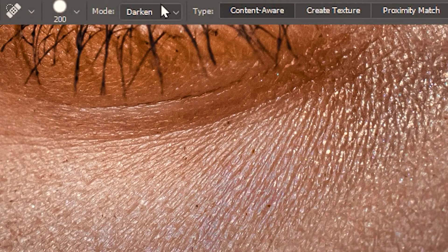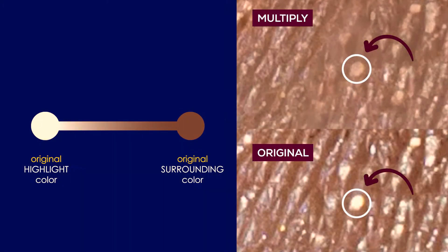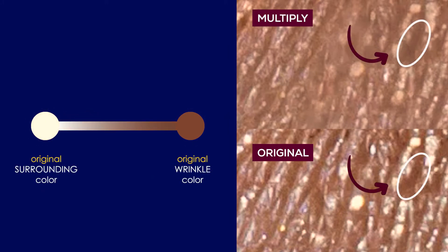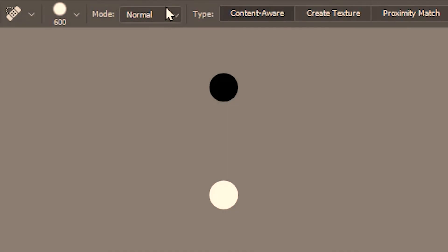I'm going to undo this and try multiply. What's happening is that it's pushing this color towards a darker shade, and over here this color also shifts more towards the darker end.